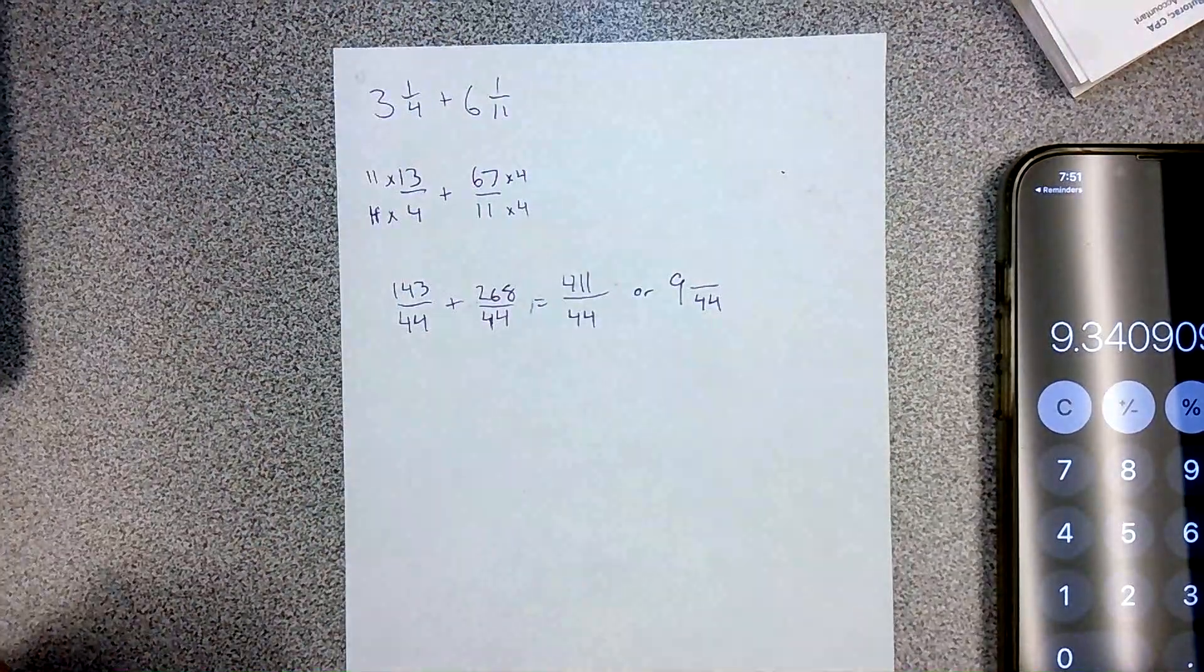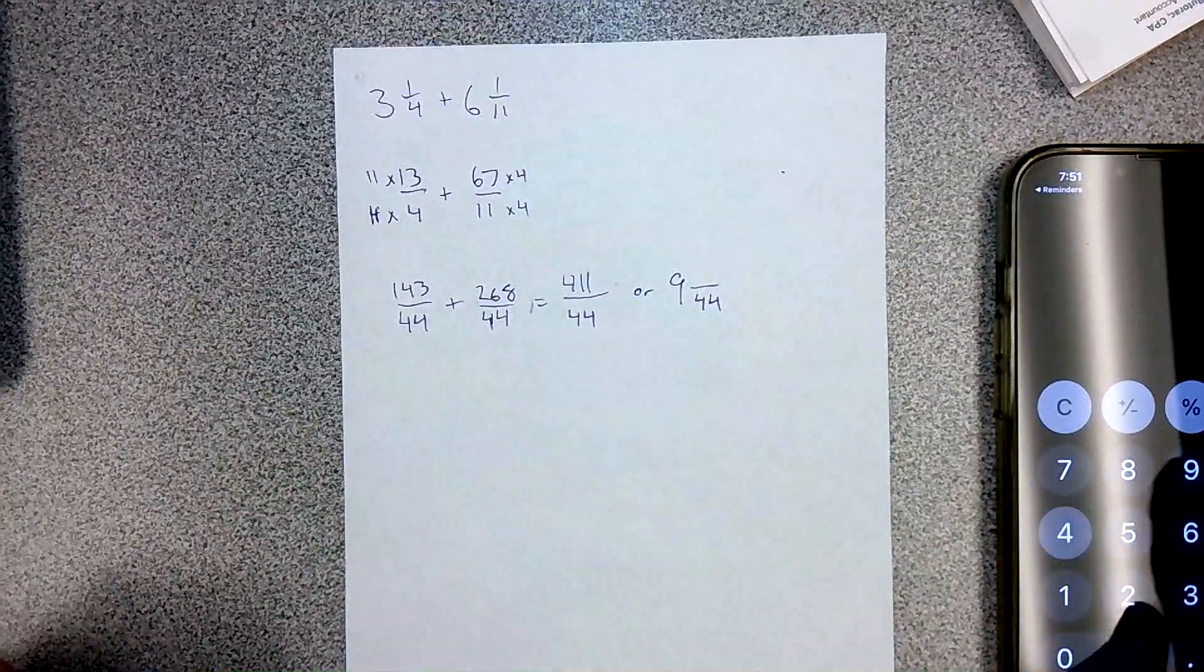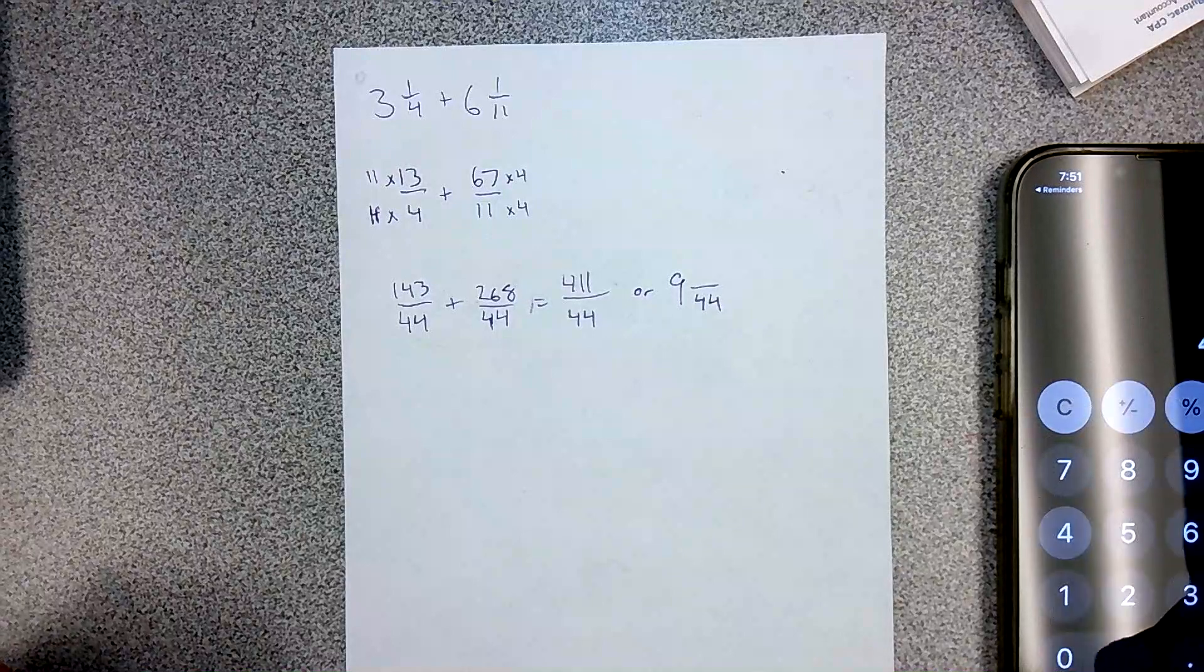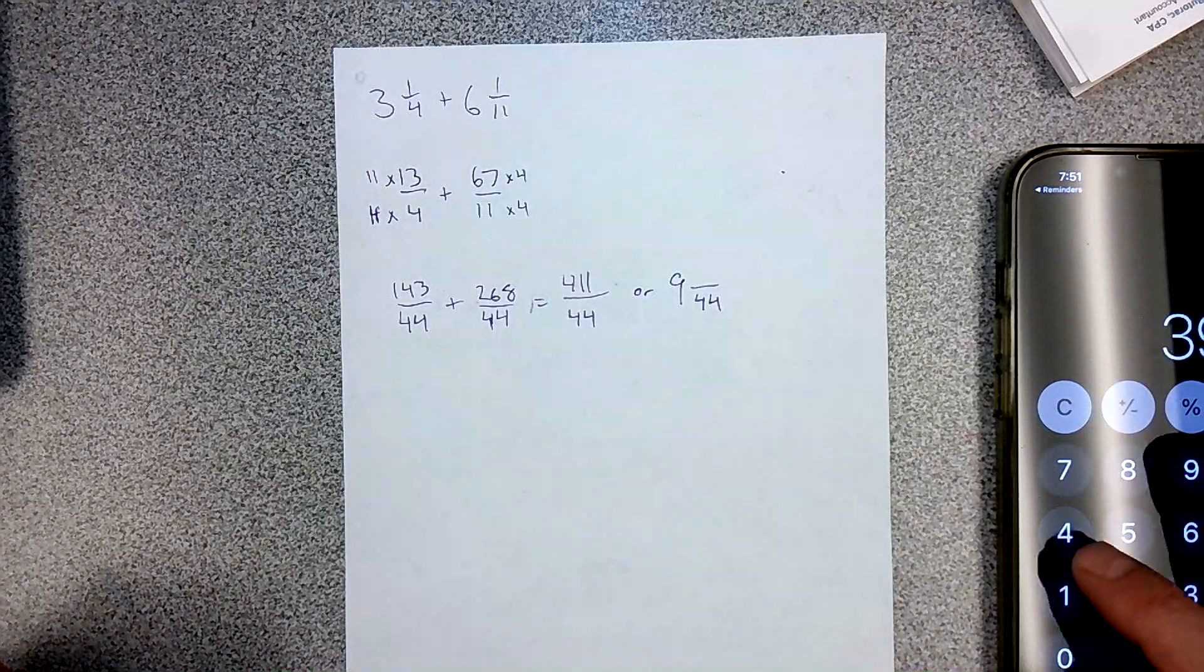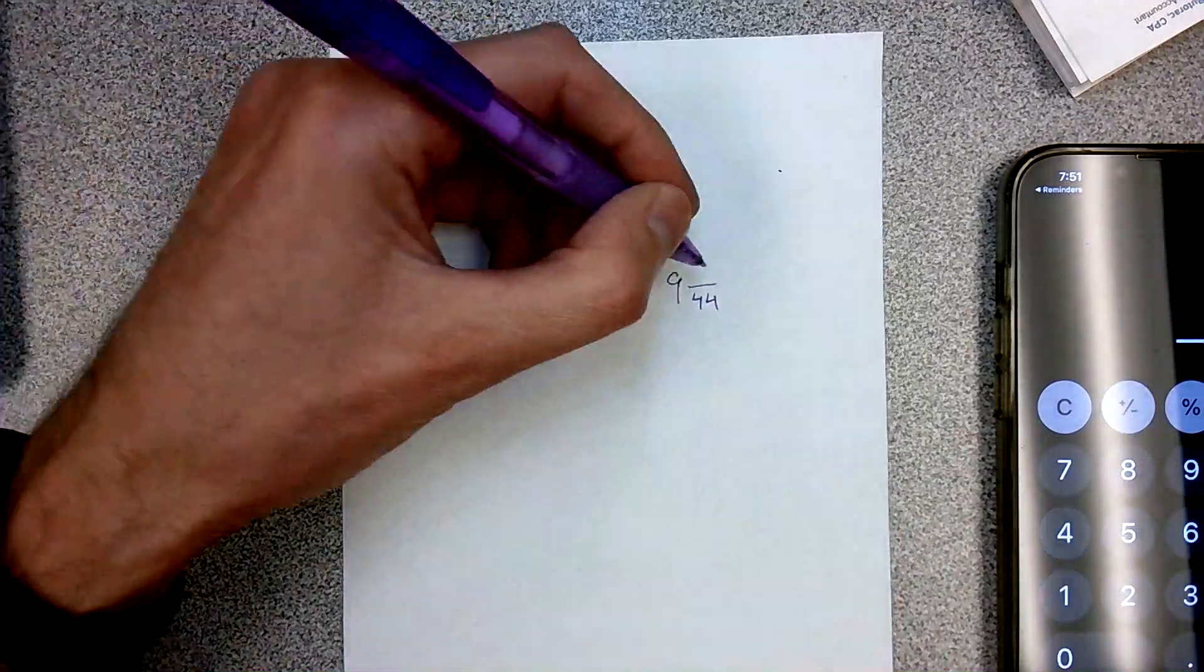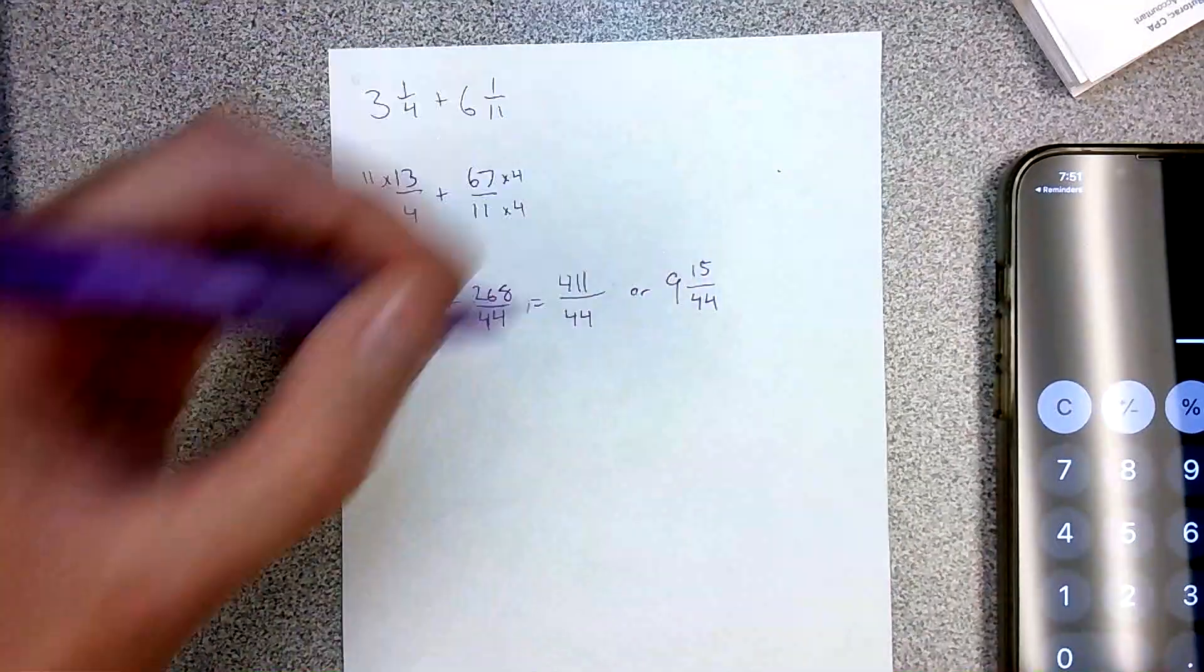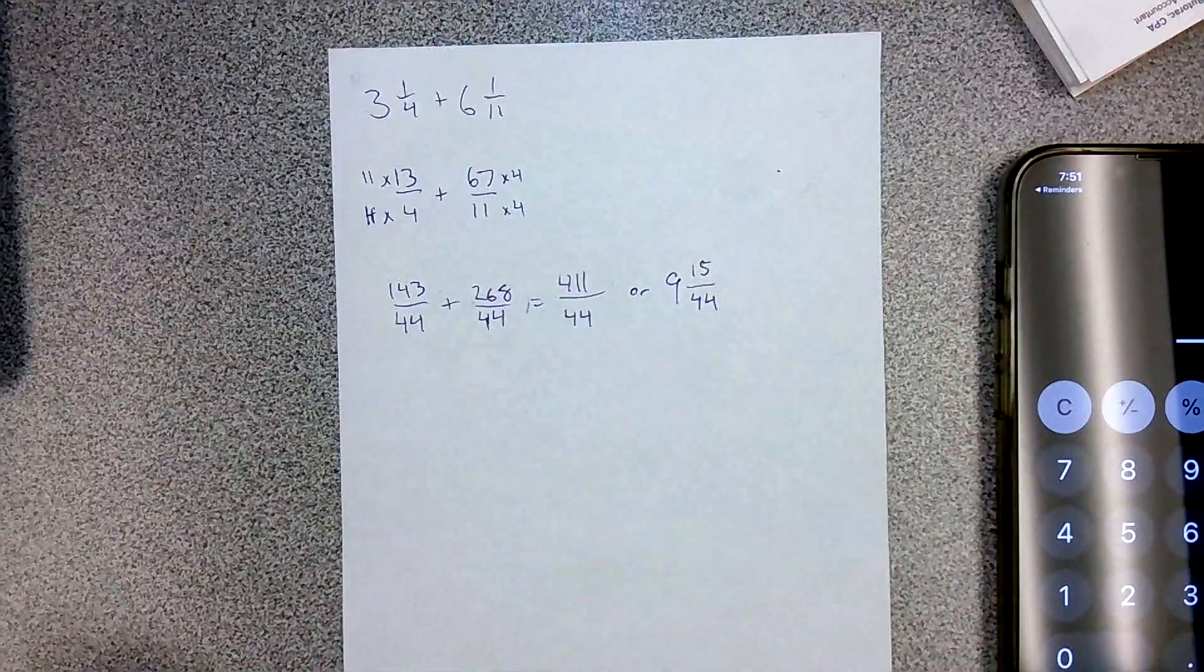44 goes into 411 nine times. And what would we have left over? 15. 15 44ths left over. Which, again, cannot be simplified.